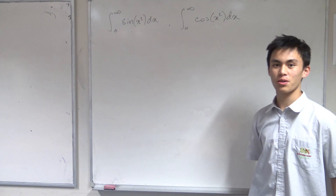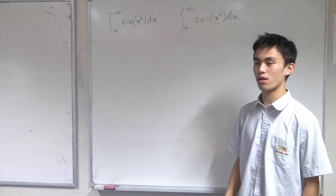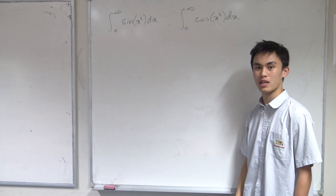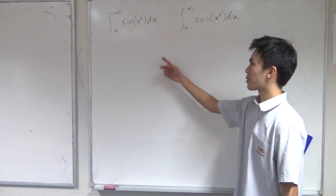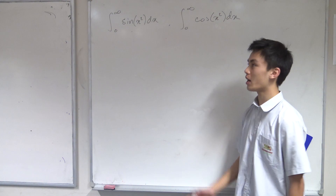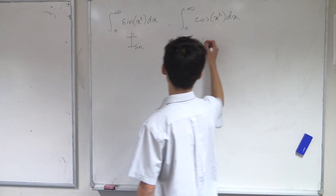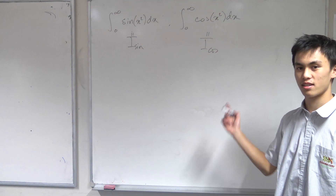Greetings everybody. Today we're going to be taking a look at these two integrals, which are called the Fresnel integrals, and we're going to be using complex analysis to solve them. These are the integral from zero to infinity of sine of x squared, as well as the cosine of x squared. I'm going to define the first as I_sine and the second as I_cosine.